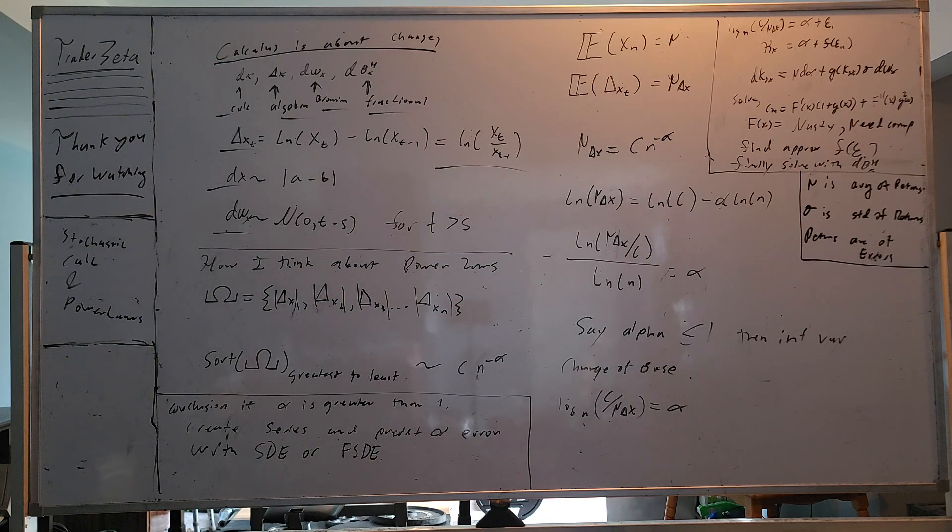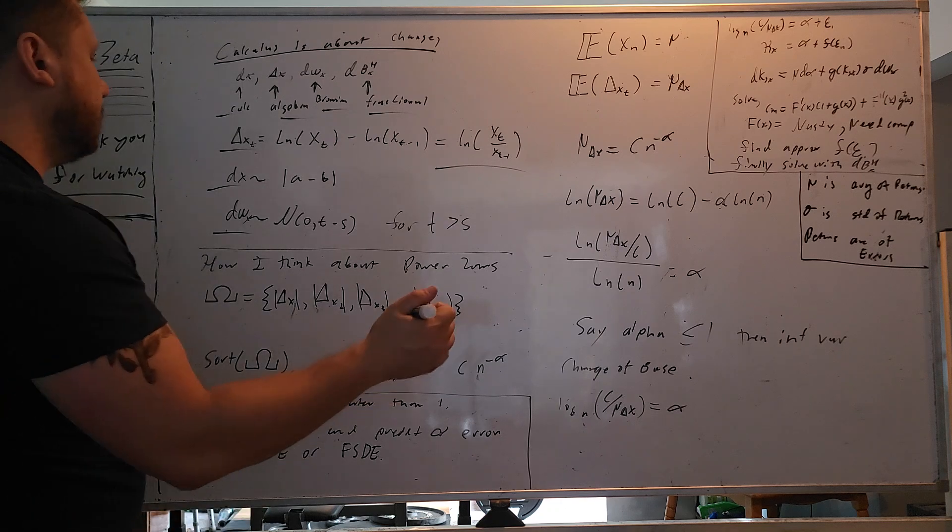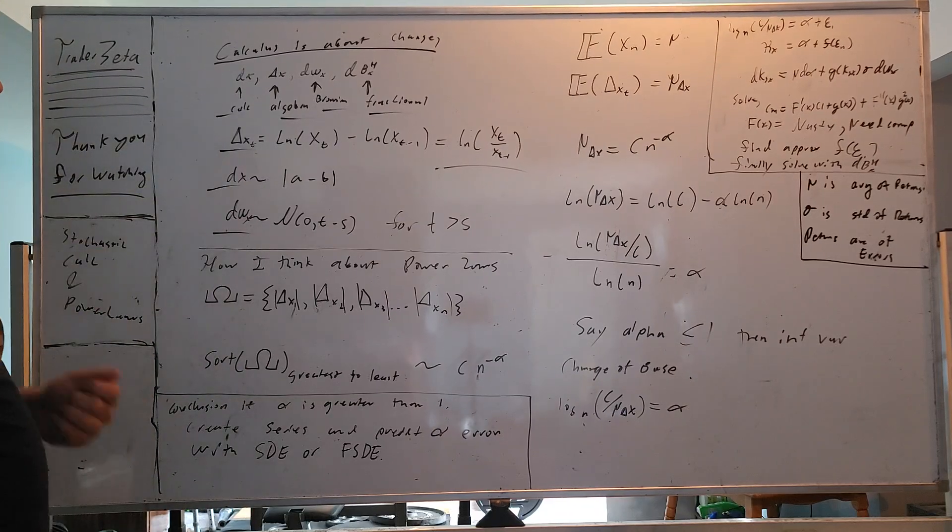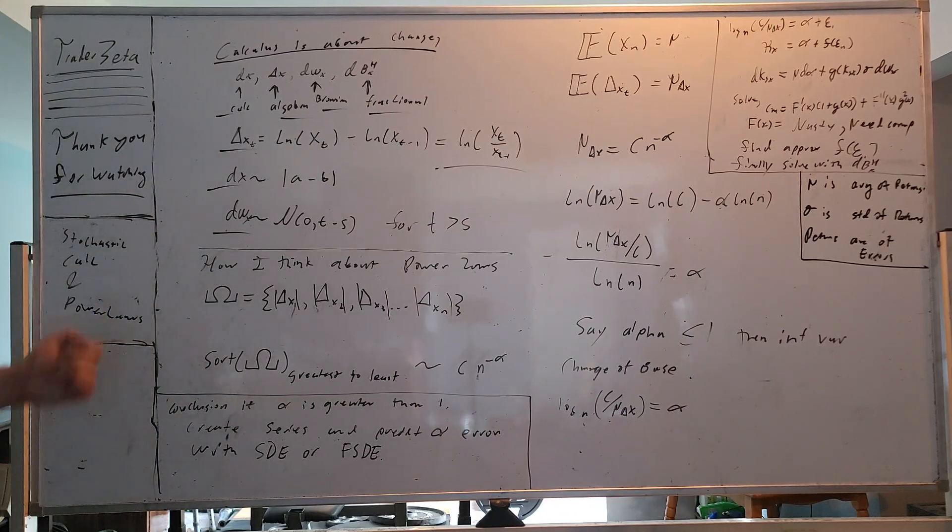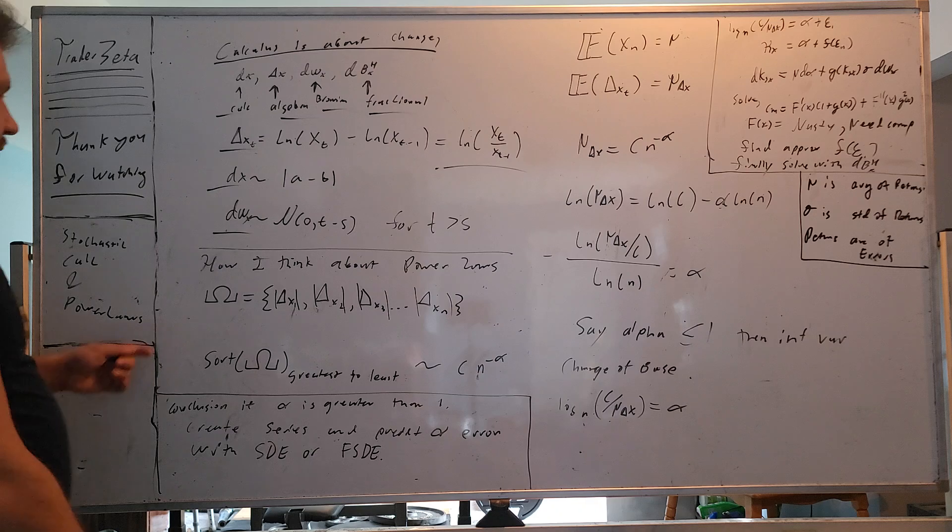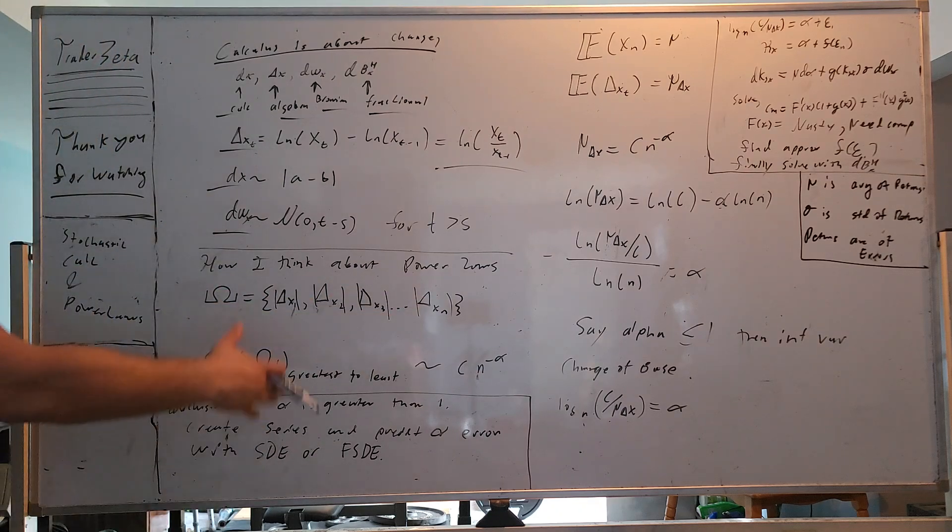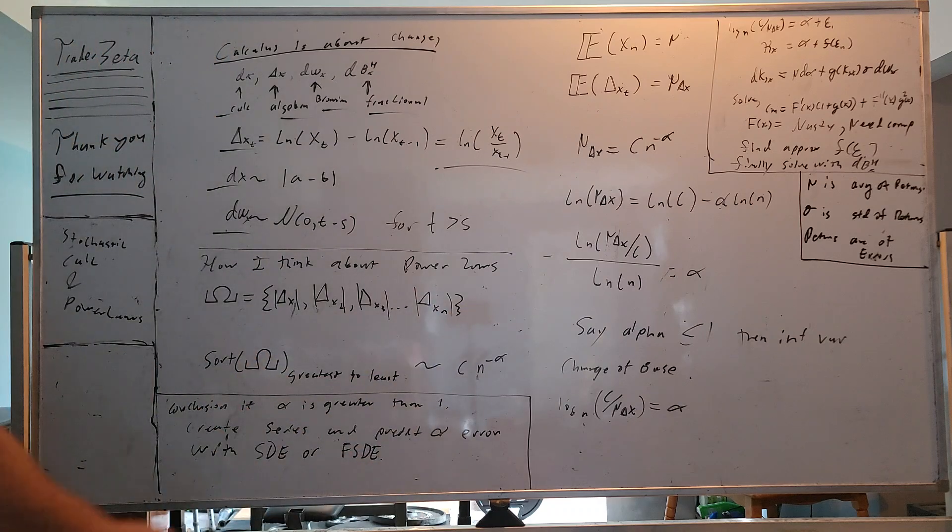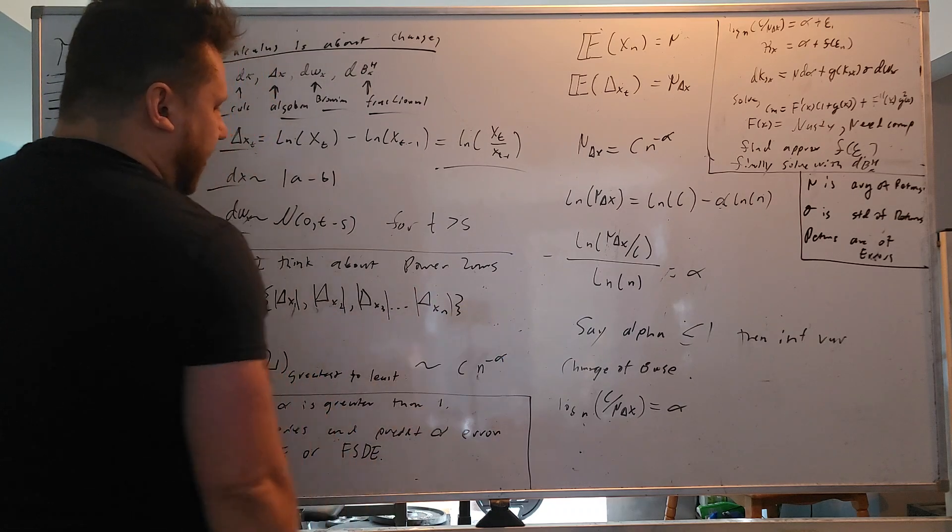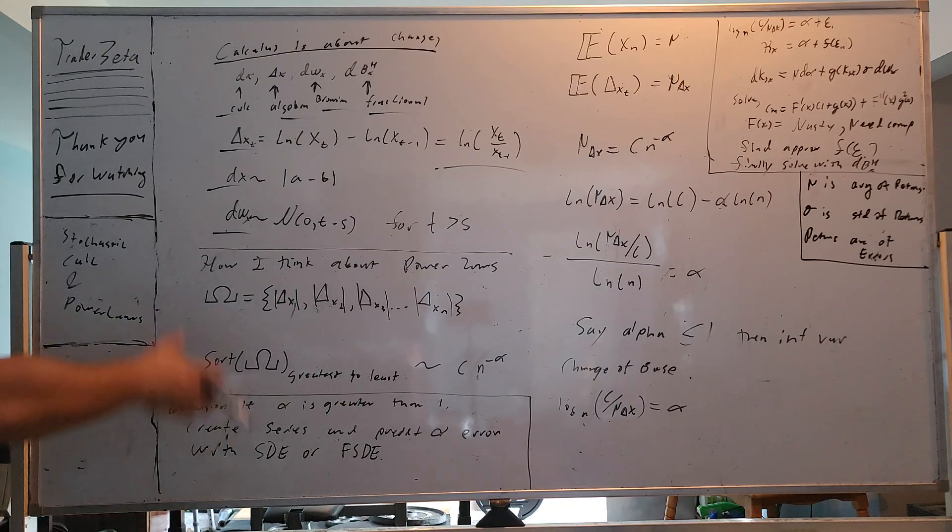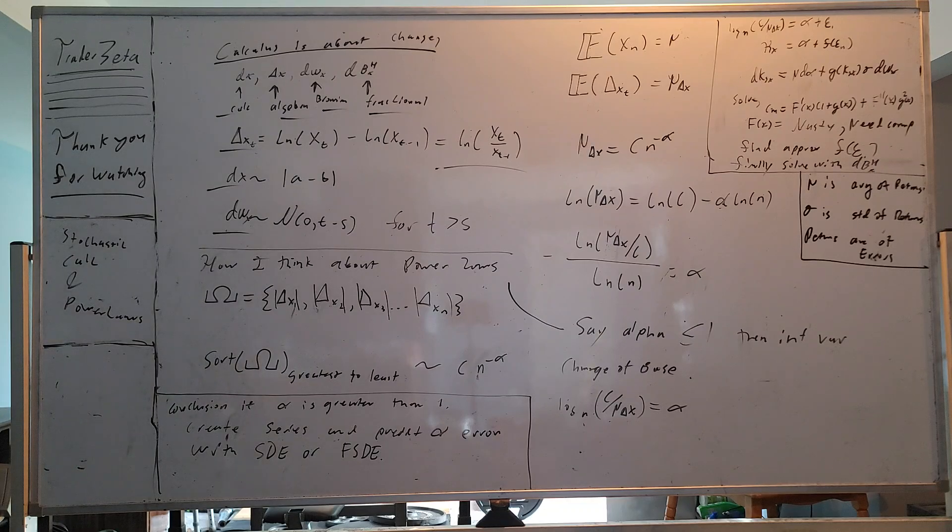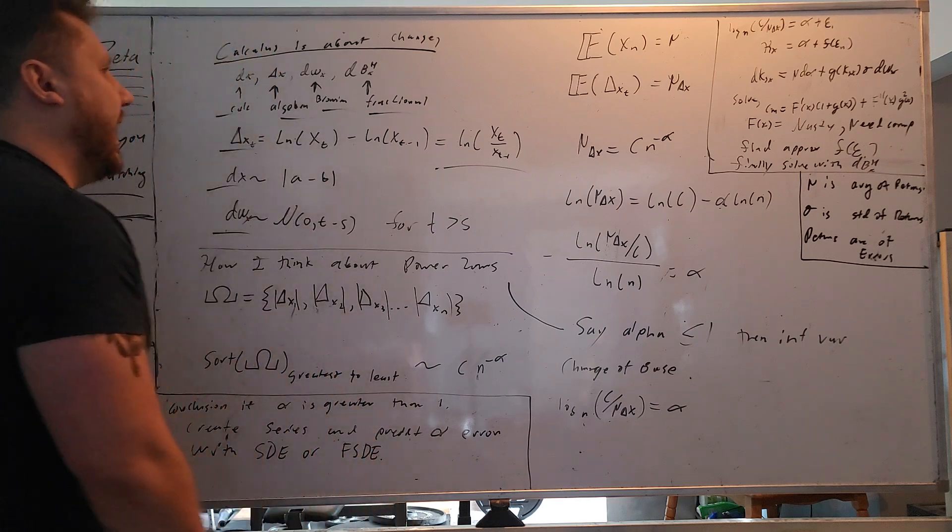This is how I think about power laws. Say we have a bunch of these returns. We're going to take the absolute value of them and sort them from greatest to least. This is going to be distributed somewhat like a power law: a constant times n to negative alpha. This greatest to least is going to be some type of power law curve.